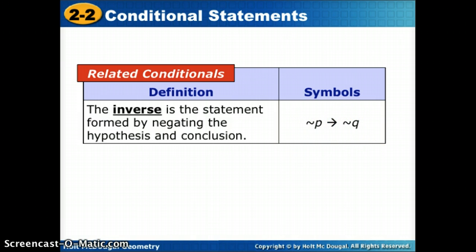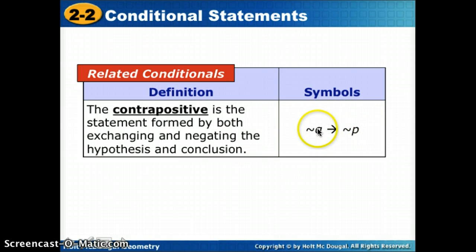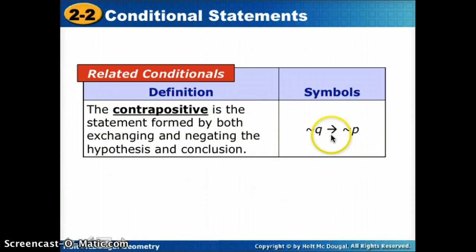The last type is the contrapositive. The contrapositive does both things: we flip the hypothesis and conclusion, and we also negate both of them. So instead of 'if P then Q,' we say 'if not-Q then not-P.' They are flipped and negated.